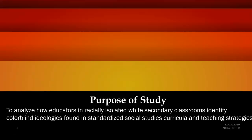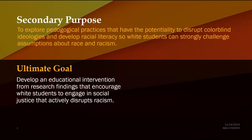The purpose of this study is to analyze how educators in racially isolated white secondary classrooms identify the colorblind ideologies that are often found in the social studies curricula and instructional strategies. A secondary purpose is to explore how instructional strategies have the potential to disrupt colorblind ideologies and to strengthen racial literacy in white students. The ultimate goal is to develop an educational intervention from the findings that encourages white students to engage in social justice that actively disrupts racism.